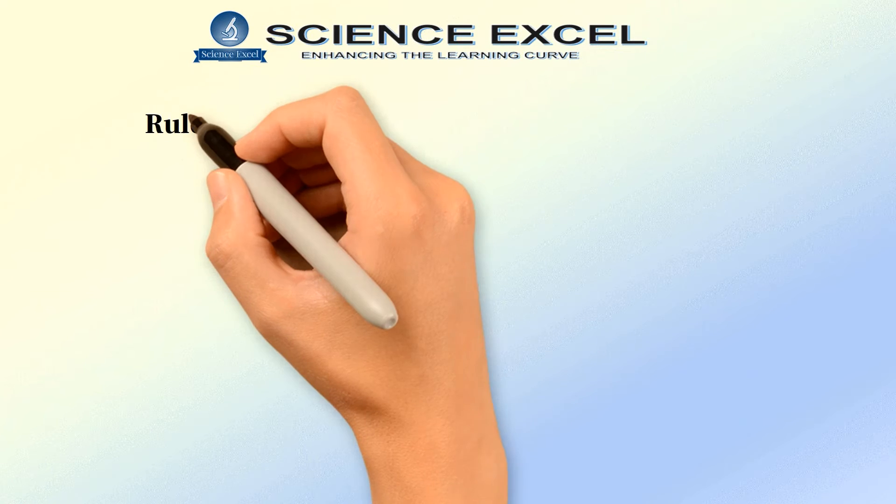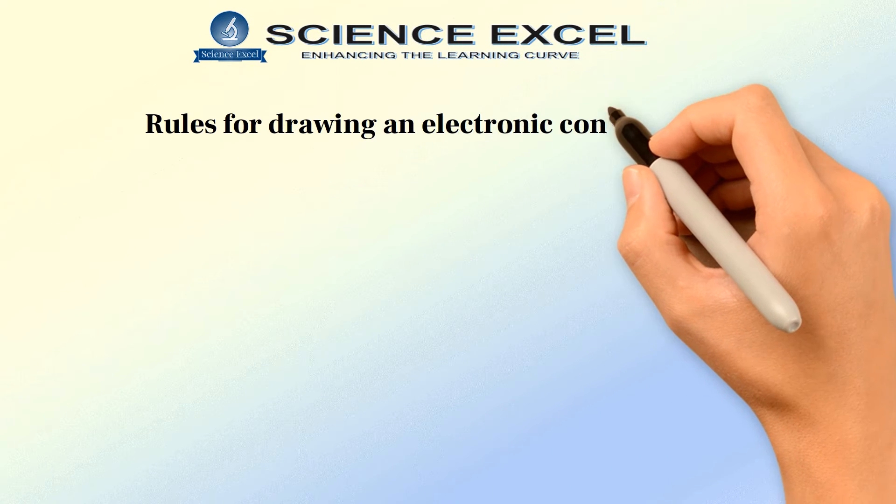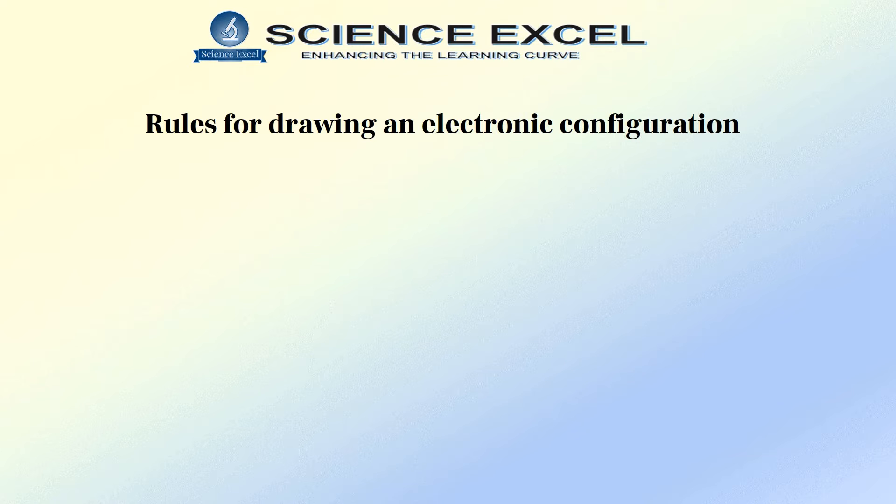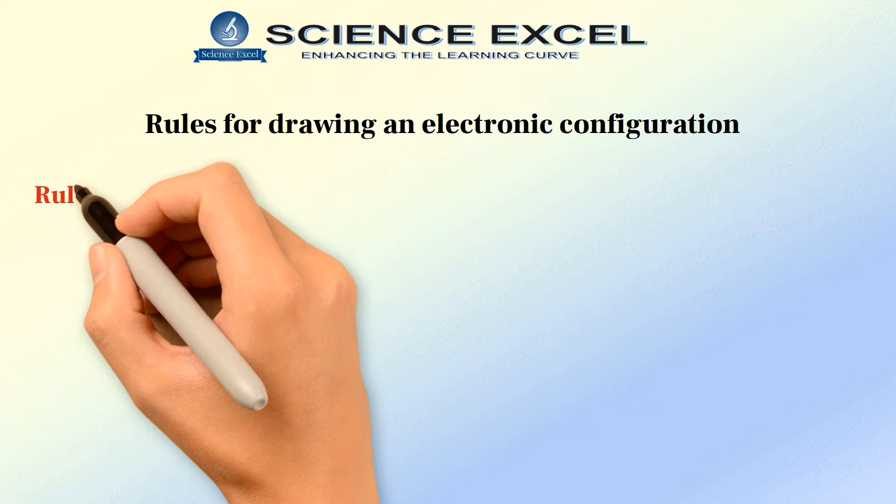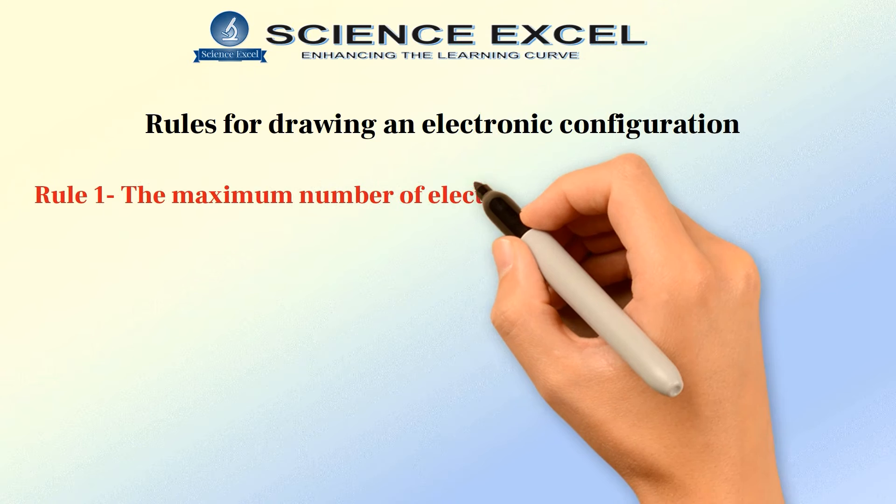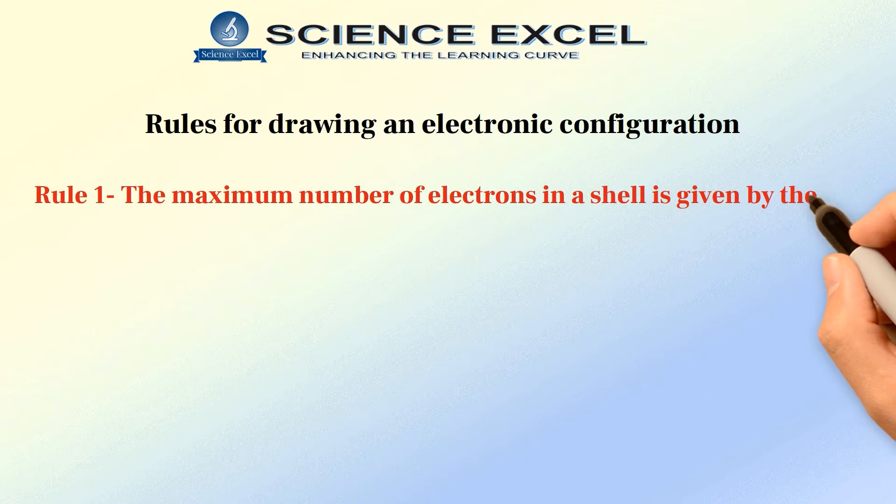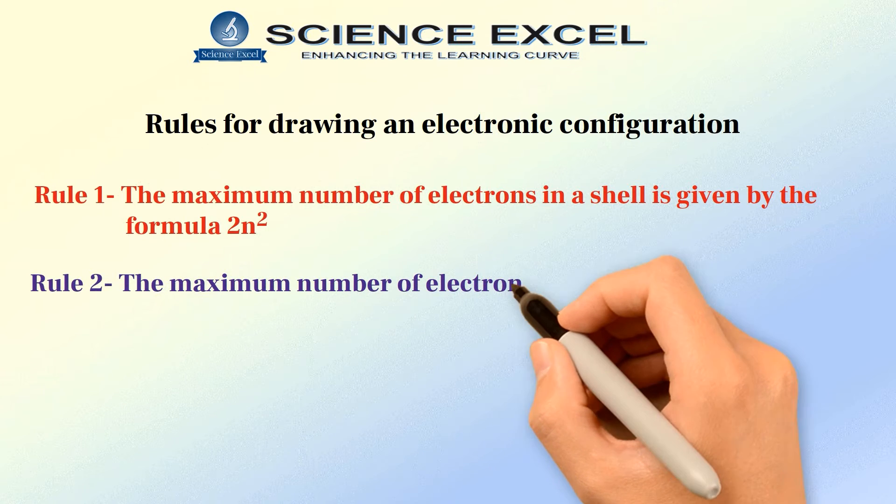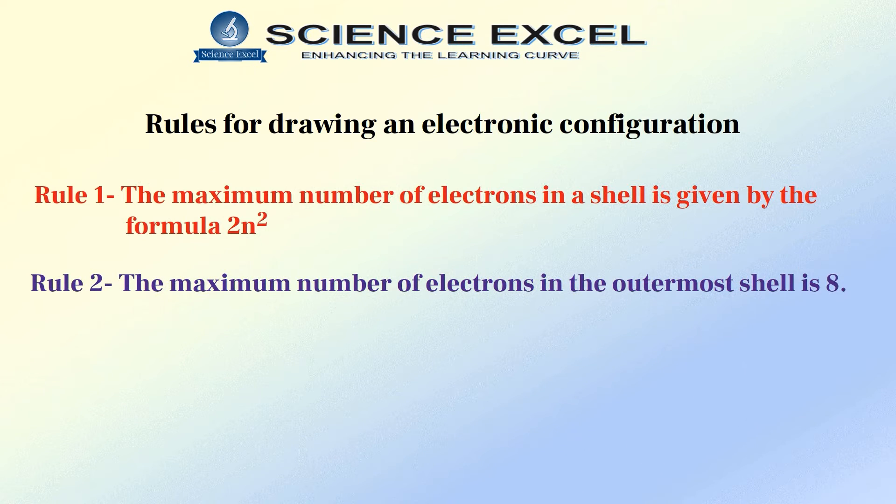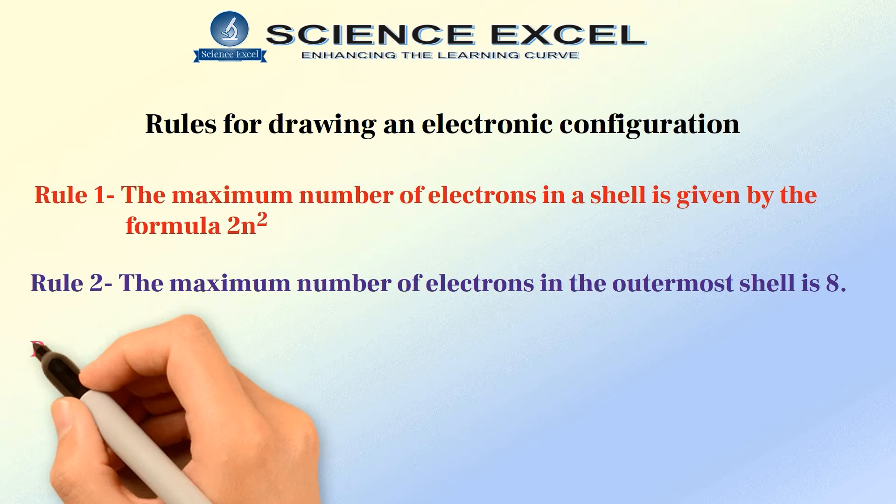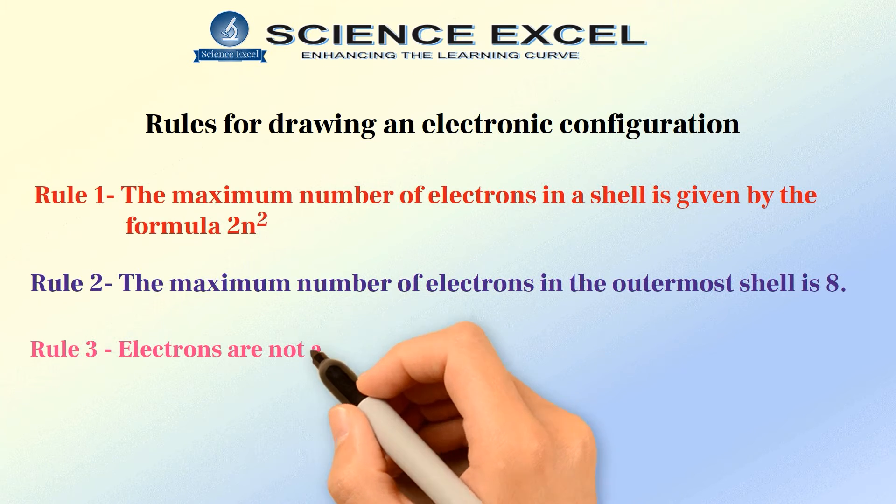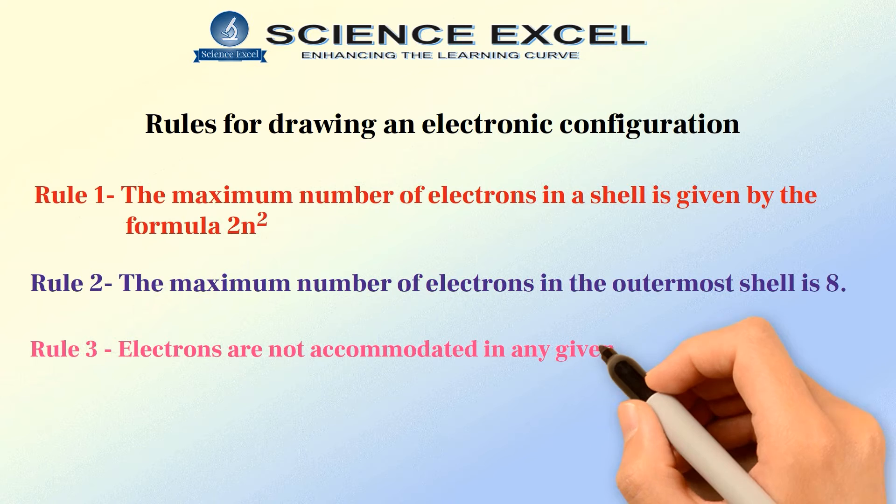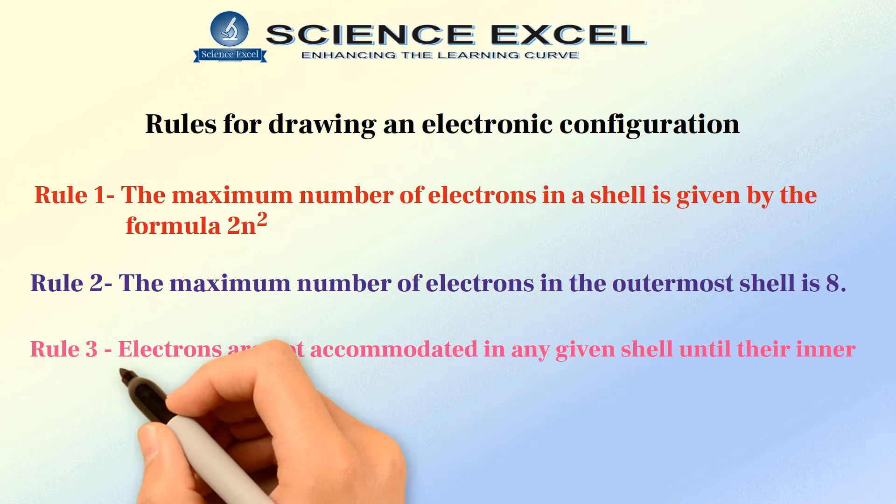Now there are some rules you need to remember while drawing an electronic configuration. The maximum number of electrons in any given shell is given by the formula 2N². The maximum number of electrons in the outermost shell is 8. The electrons are not accommodated in any given shell until their inner shells are filled.